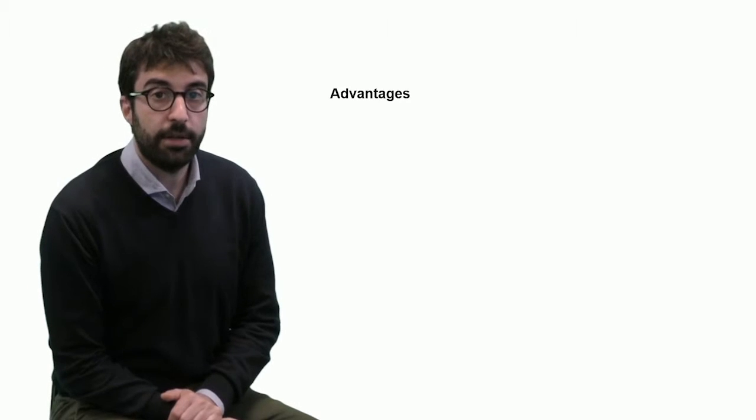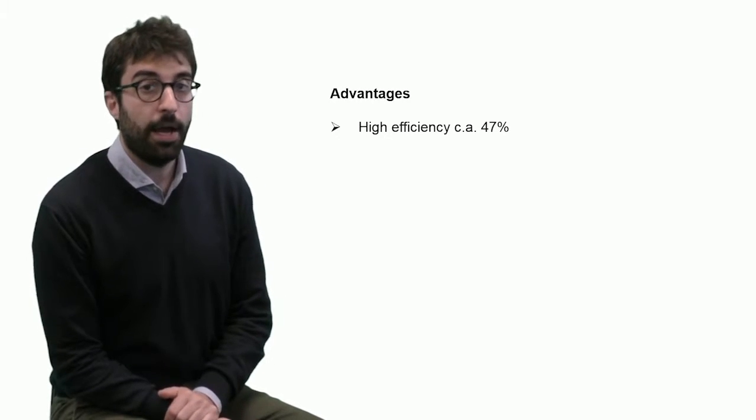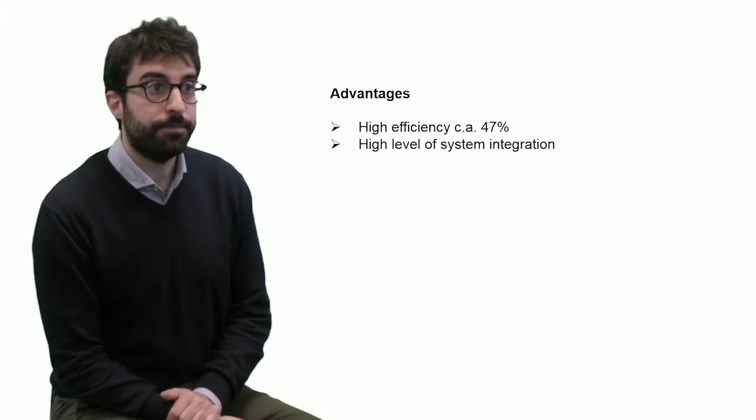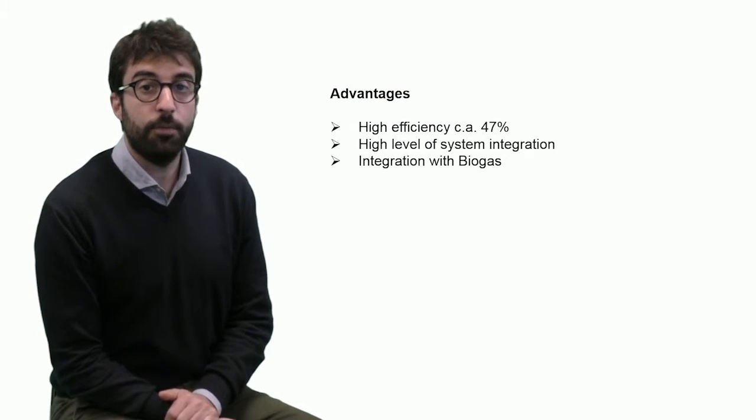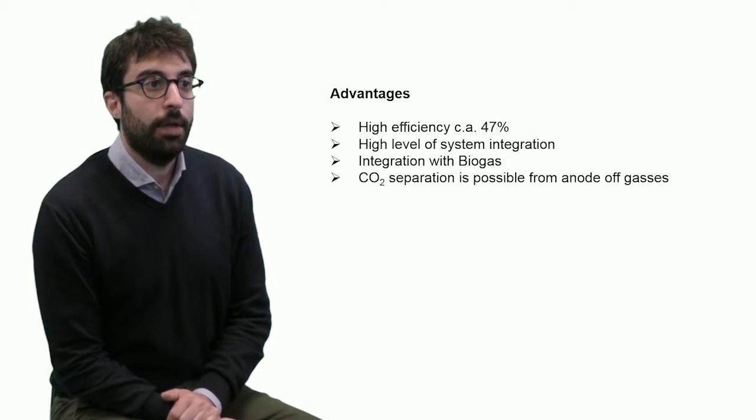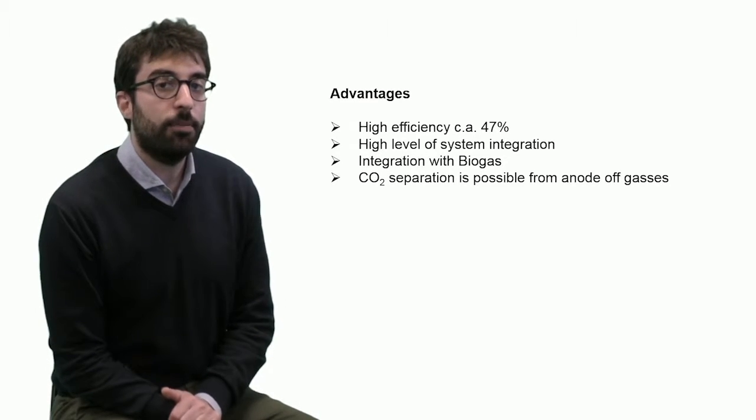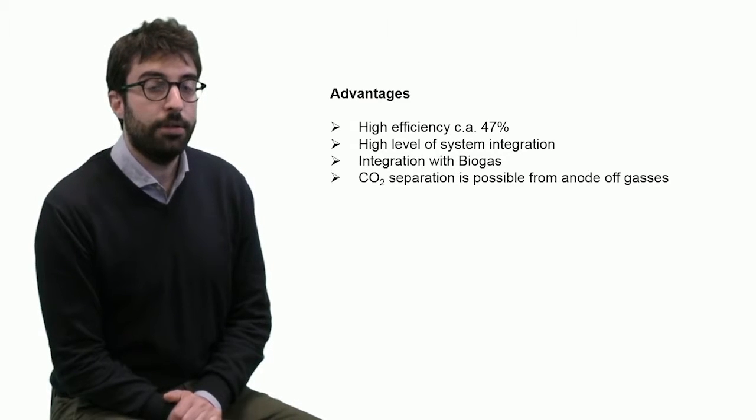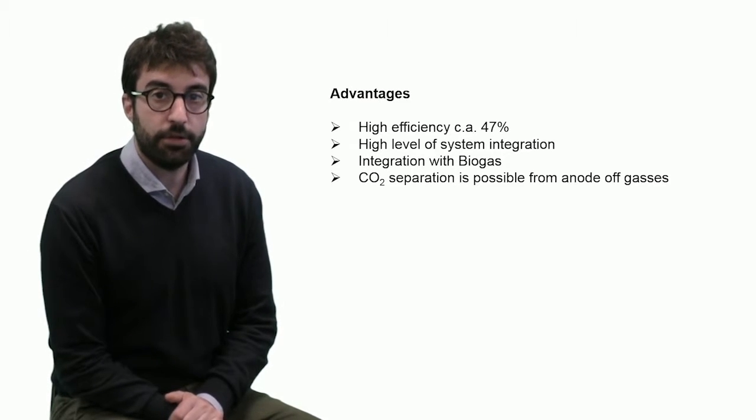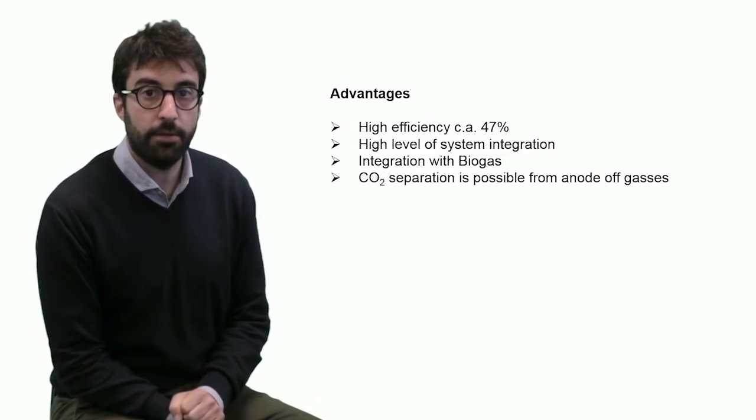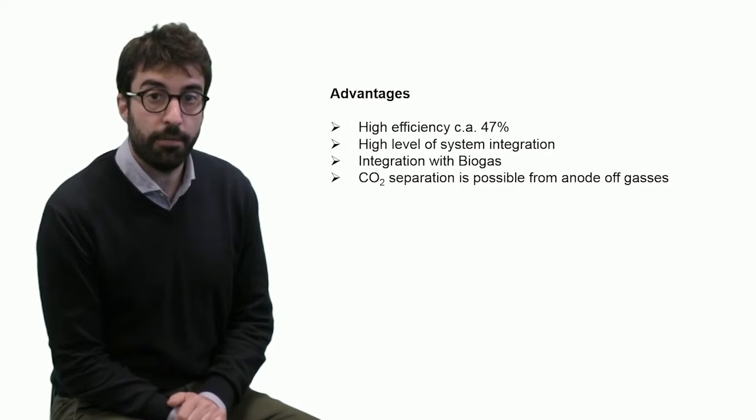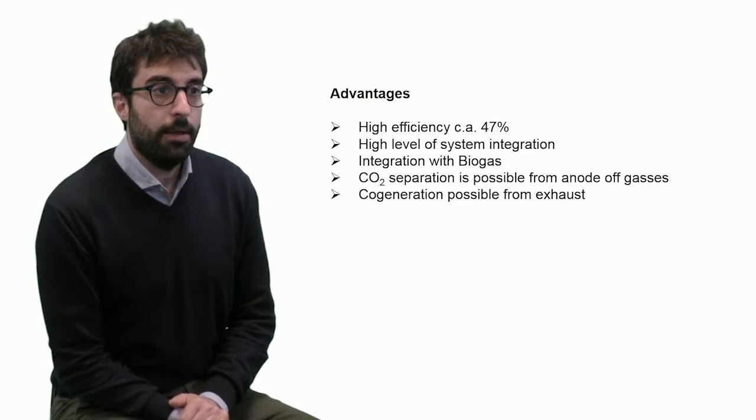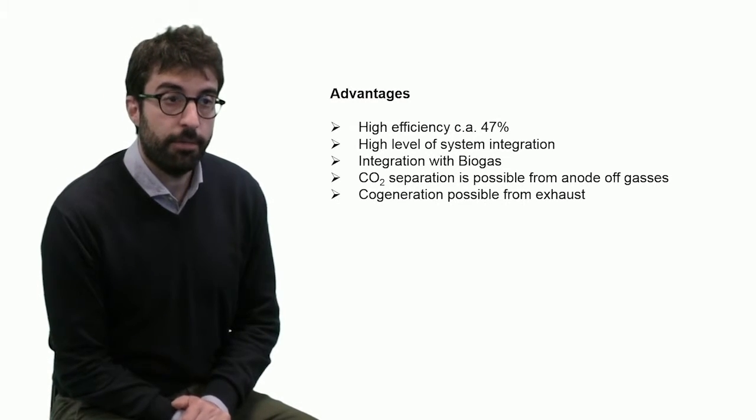Of course, what are the advantages of this kind of system? High efficiency, usually 47%, high level of system integration, integration with biogas for example, and carbon dioxide separation is possible from anode off-gases. This requires a little bit of modification of the layout we saw, but we can separate carbon dioxide from the off-gases before getting into the burner. Cogeneration is possible from exhaust.